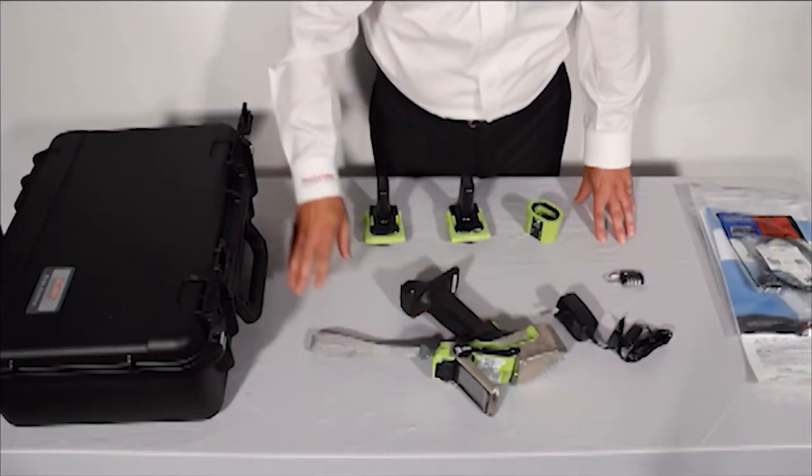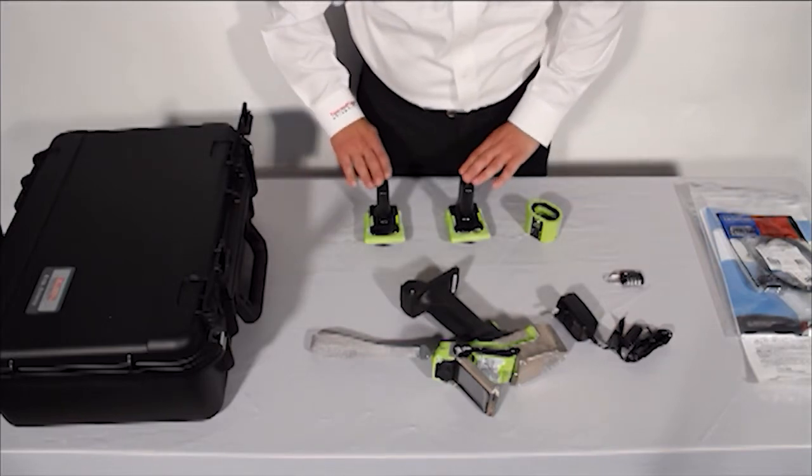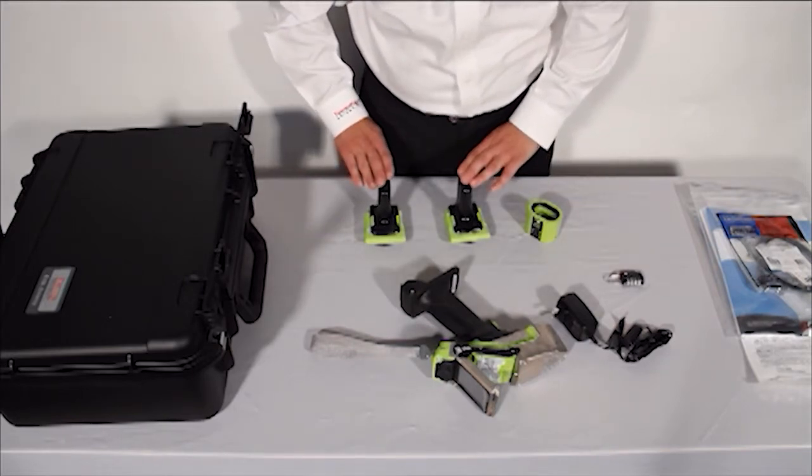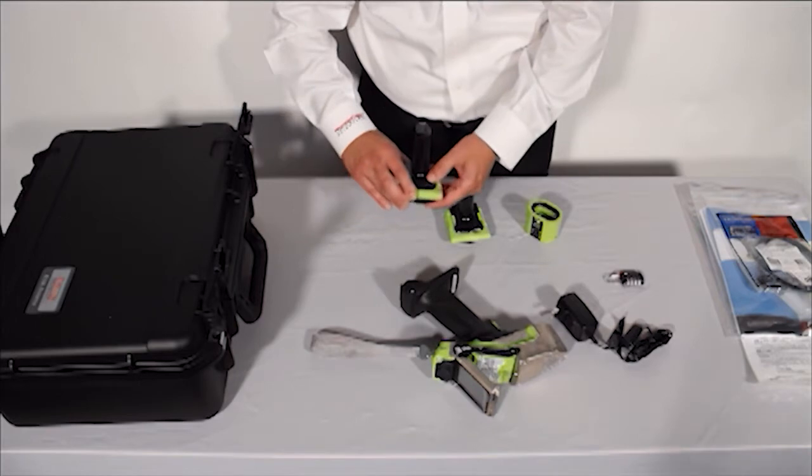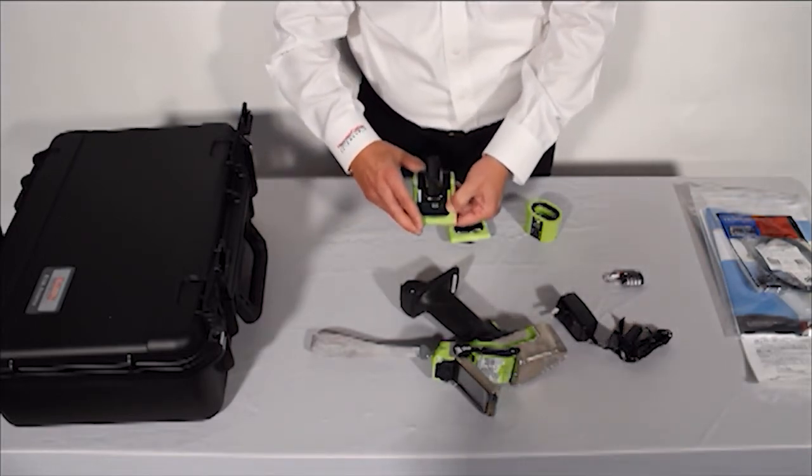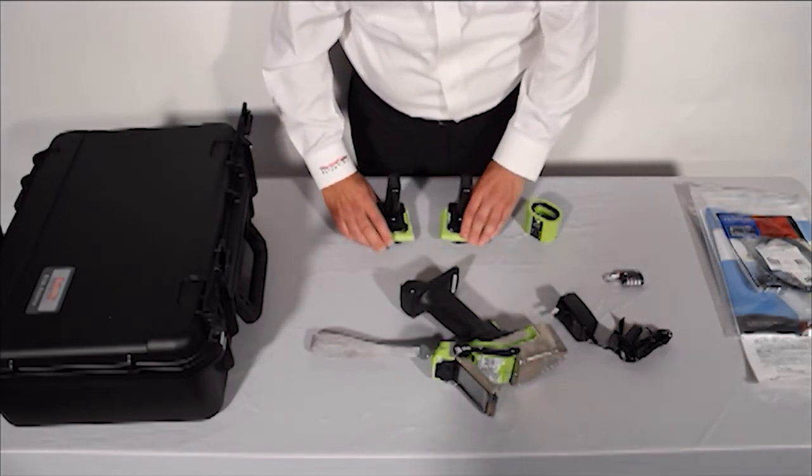From your carry case, you'll find the following: the analyzer itself and two batteries. Each battery has an indicator light. Press the button and it tells you the percent charge, whether it's ready to go or not.